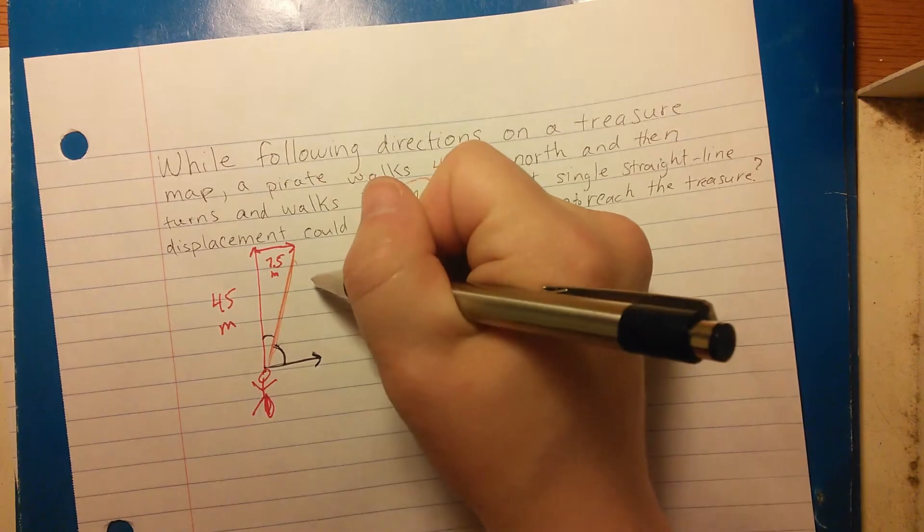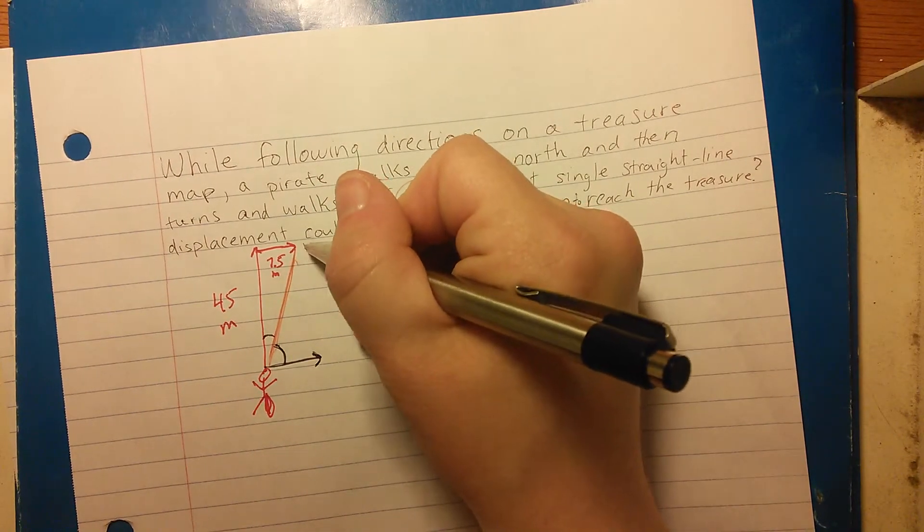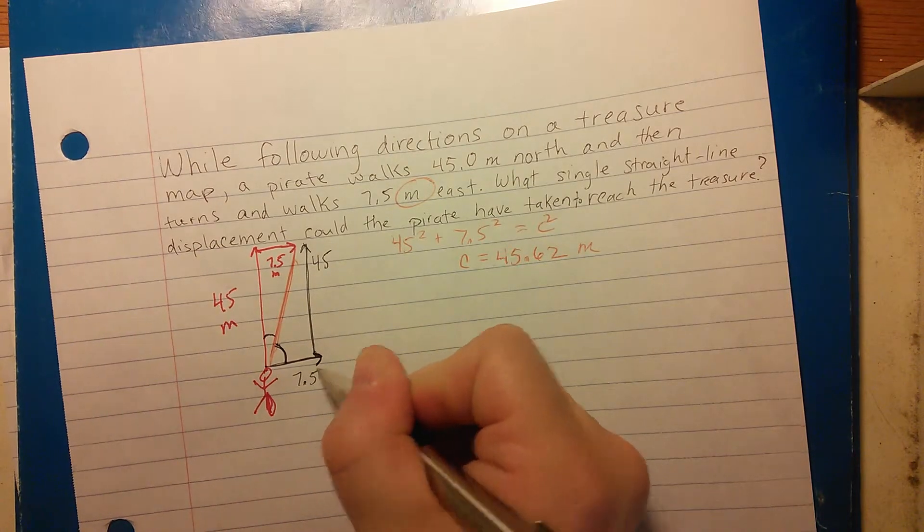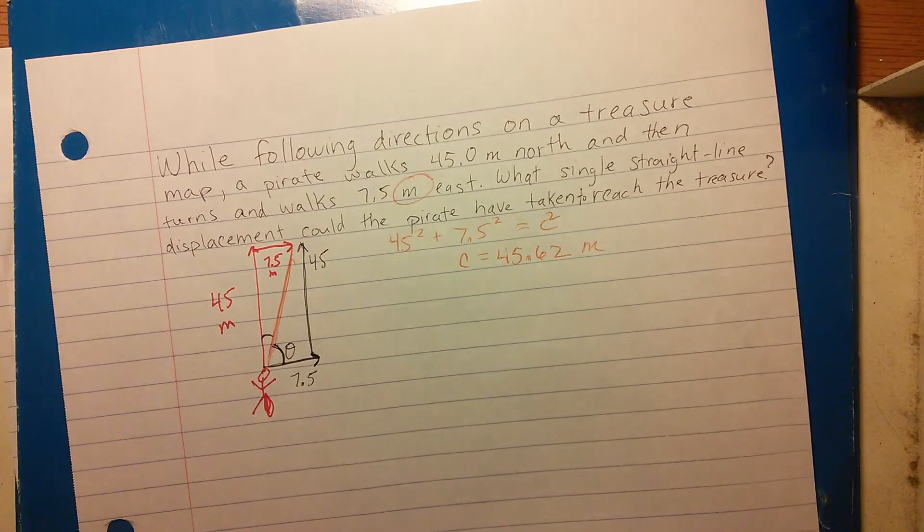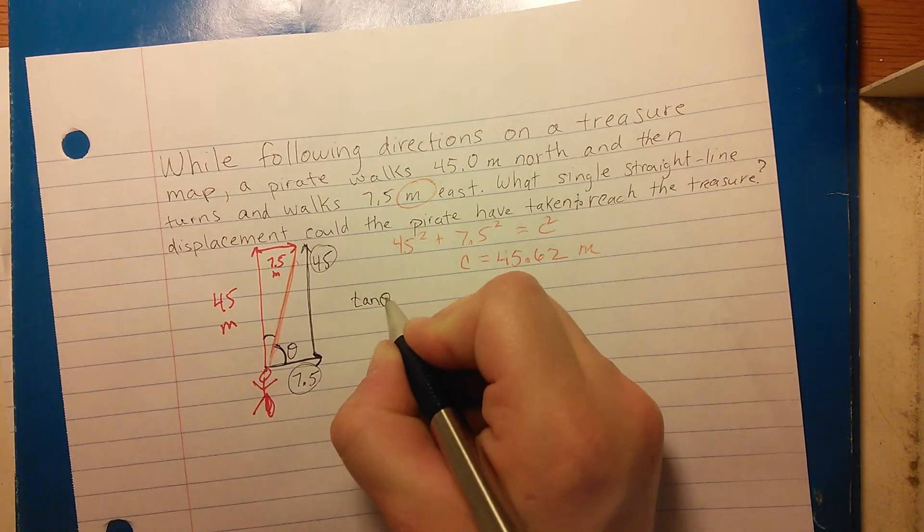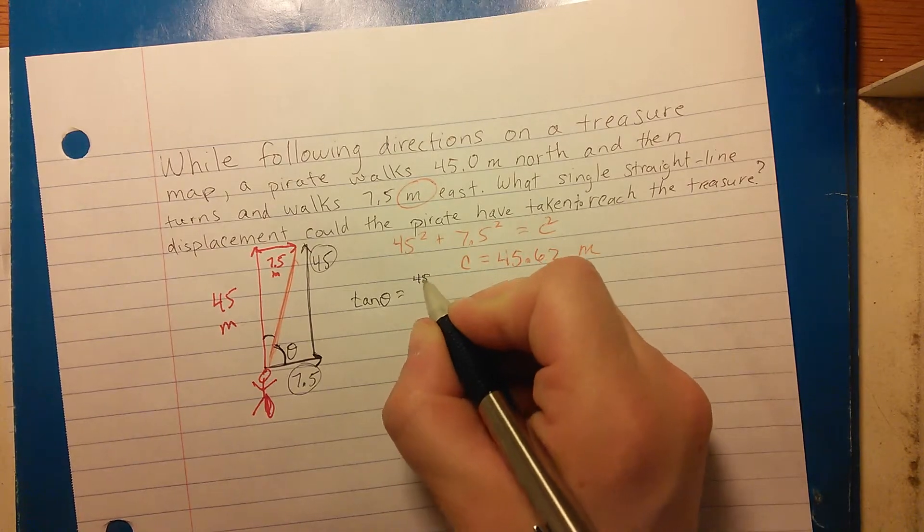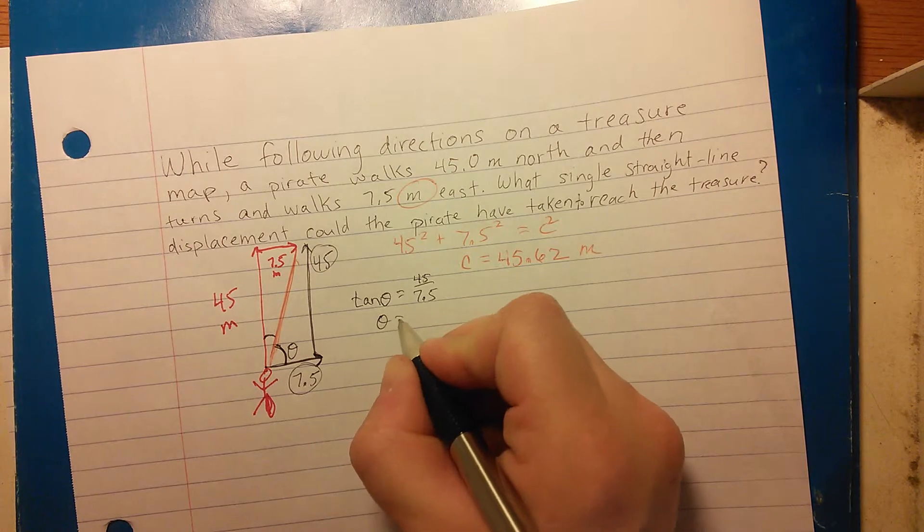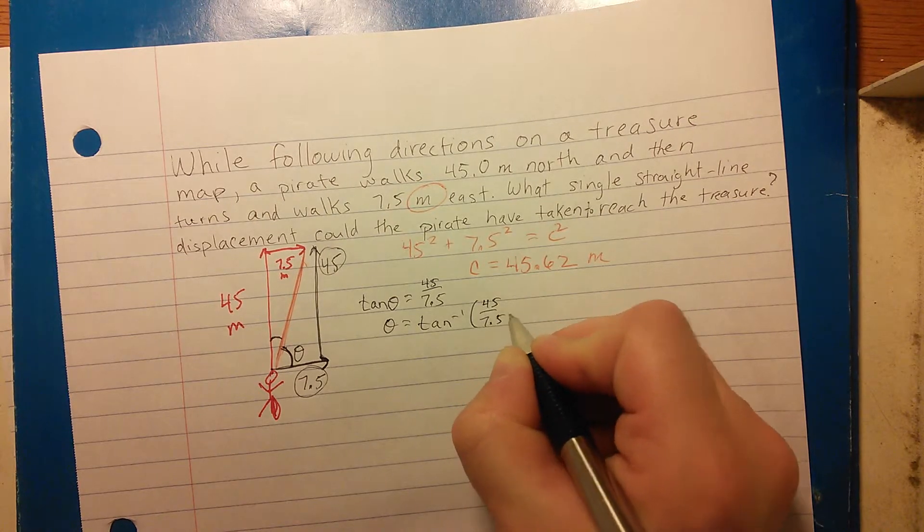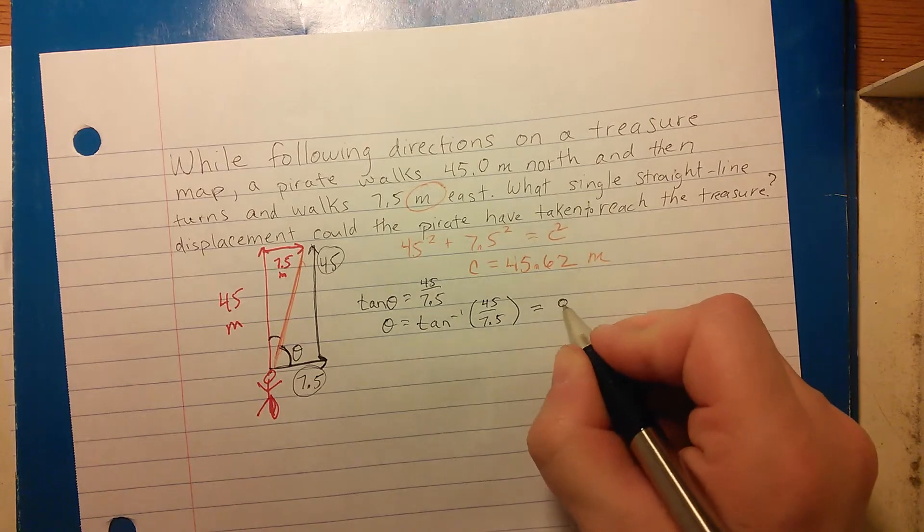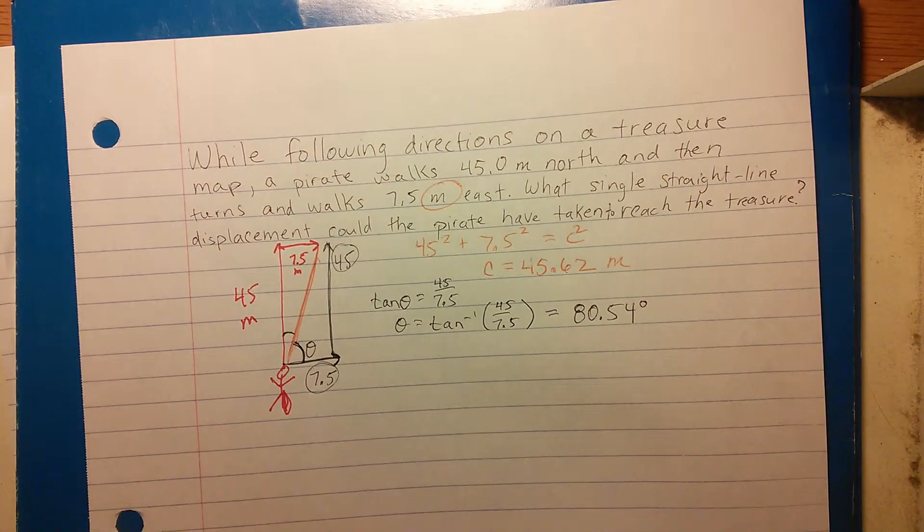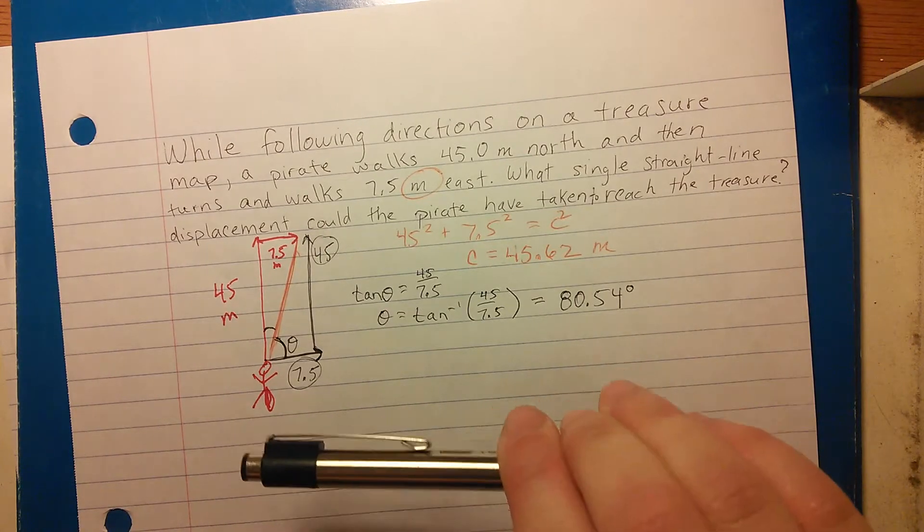To do that, you can draw a similar triangle right here. So this line is 45, this line is 7.5, and here is our angle. You'll notice we just want to use the tangent function again: opposite over adjacent. So tan of the angle is going to be equal to 45 over 7.5. That means the angle is going to be equal to the inverse tan of 45 over 7.5. What you should get for that is 80.54 degrees.